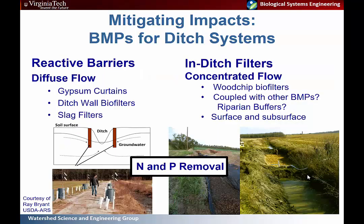There are also reactive barriers that capture diffuse flow running parallel to ditches and intercept water entering them. These can be gypsum curtains — a byproduct from coal production — slag filters — a byproduct from steel production that can absorb phosphorus — or ditch wall biofilters made with wood chips. Wood chips provide an energy source for microorganisms that convert nitrate nitrogen from fertilizers into atmospheric nitrogen, completely removing it from the system.